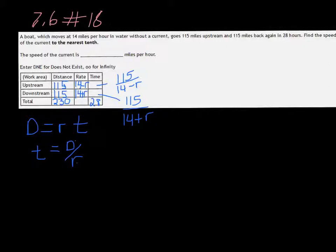We have enough now to make an equation. The time to go upstream, which is 115 over 14 minus r, plus the time it takes to go downstream, 115 over 14 plus r, is equal to 28.